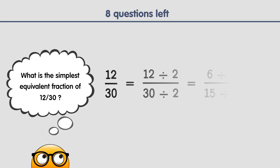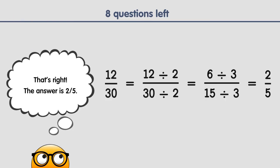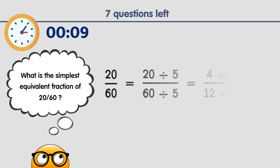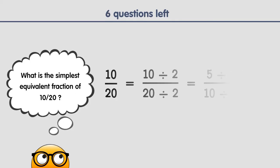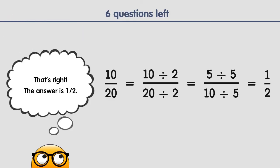What is the simplest equivalent fraction of 12 thirtieths? The answer is 2 fifths. What is the simplest equivalent fraction of 20 sixtieths? The answer is 1 third. What is the simplest equivalent fraction of 10 thirtieths? The answer is a half.